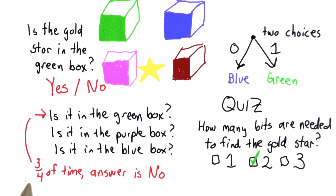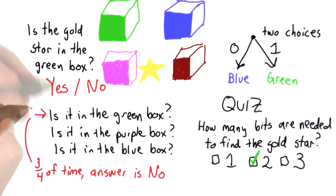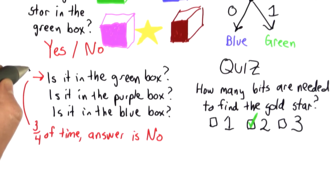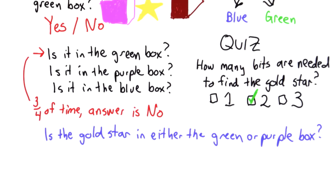If the question isn't like that — if the answer is no more often than yes — well then we could guess no and be right more than half the time. So we're not getting a full bit of information, because we had a good chance of being right without that answer. We want questions where yes and no are equally likely. So we could ask: is the gold star in either the green or the purple box?